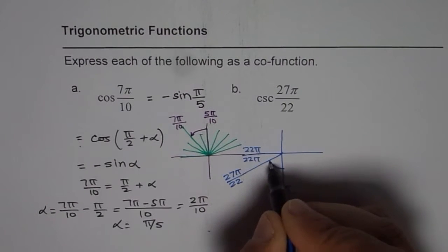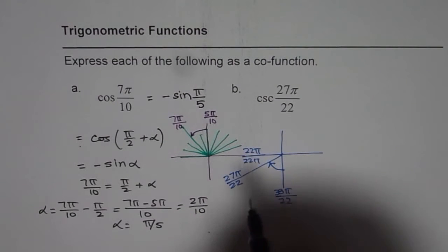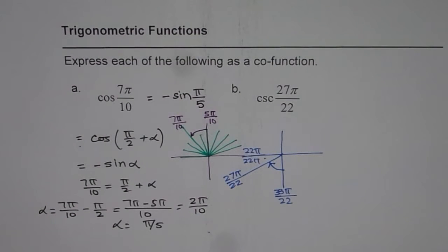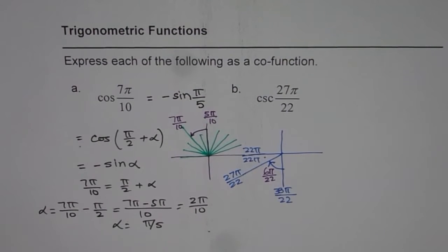So this is 5 and these are 6. So 6π by 22 is something which is left, correct?